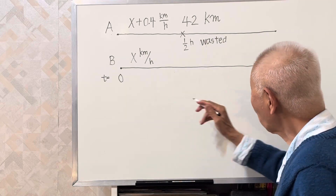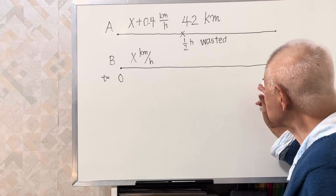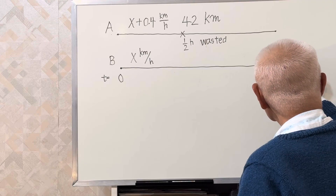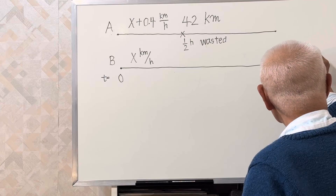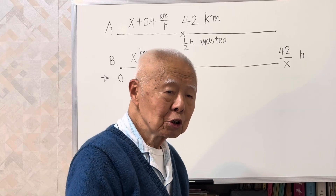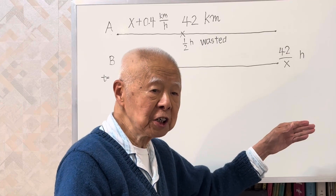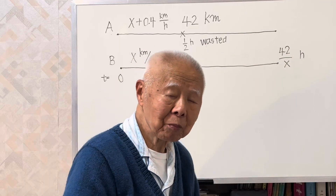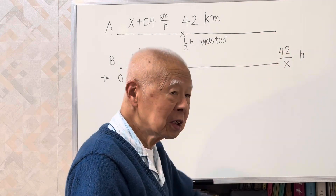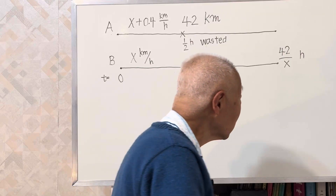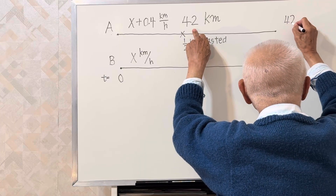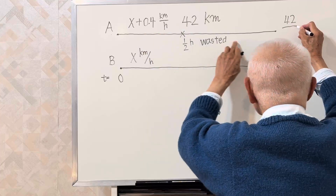Then what is the time B arrives? It's obviously 42 divided by X. The time for B to complete the journey is 42 over X hours. The time for A to arrive at the second city: the total distance is 42, and the speed is X plus 0.4.